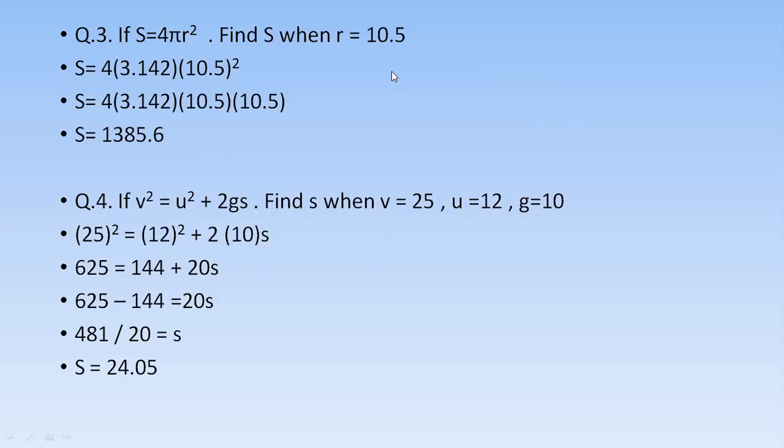Question number four: v is equal to u² plus 2gs. This is the question. This time you need to calculate s. You will put v = 25, u = 12, and g = 10 in this expression. v is 25, 25 square is 625. 12 square, because u is 12.